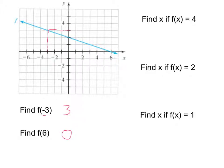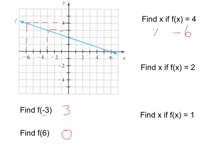Now find x if f of x equals 4. The 4 is the output — the y-coordinate. So we find 4 on the y-axis, draw a dotted line over to the graph, then go down to find the x-coordinate, which is negative 6. So x equals negative 6. For the next example, find x if f of x equals 2: the 2 is the y-coordinate, so we find 2 on the y-axis and the corresponding x-coordinate is 0.